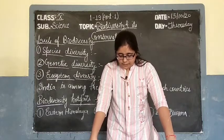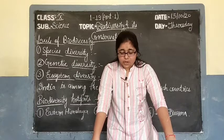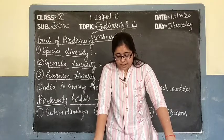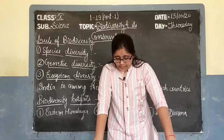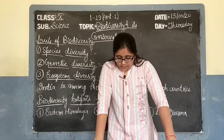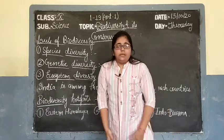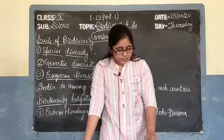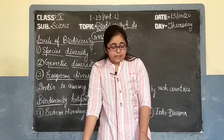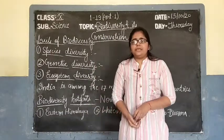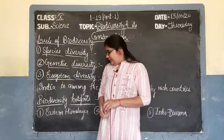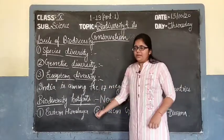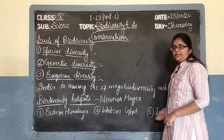The third hotspot is the Indo-Burma biodiversity region, which includes countries like China, India, Myanmar, Vietnam, Thailand, Cambodia, and Malaysia. So there are 3 hotspots present in India among the 34 total: Eastern Himalaya, Western Ghats, and Indo-Burma.